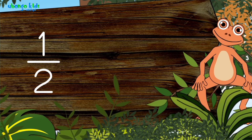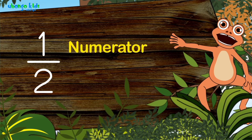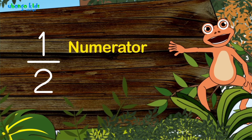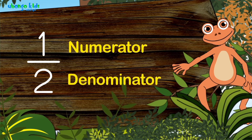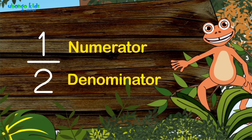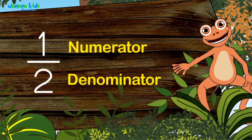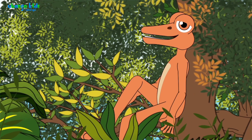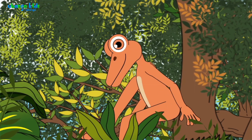In English, we call the top number the numerator, and we call the bottom number the denominator. Numerator, denominator. Now, let's show them an example, Mama Ndege.